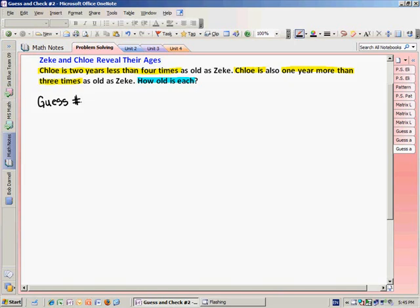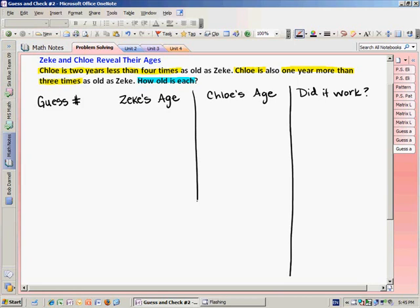But which one do I guess first? If you look at the information in the problem, all the math is being done to Zeke's age. So it makes sense that I guess Zeke's age first. And from that I can then figure out what Chloe's age is. So notice how I list these in order of how I'm going to guess them. And lastly I need to ask myself, did my guess work? That should always be your last column when you're creating a guess and check chart.